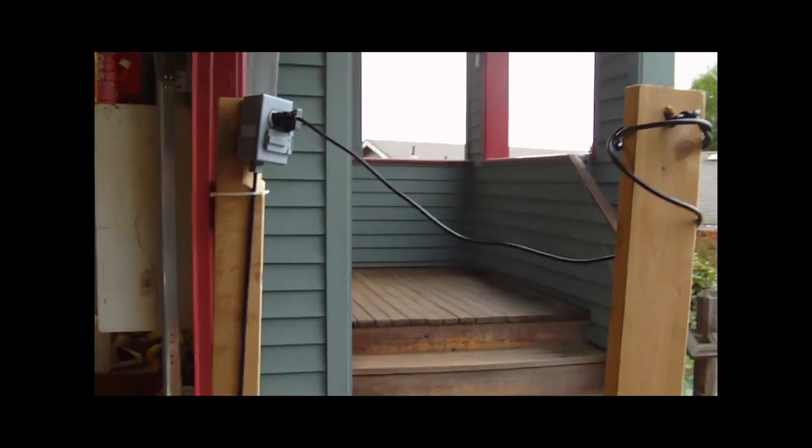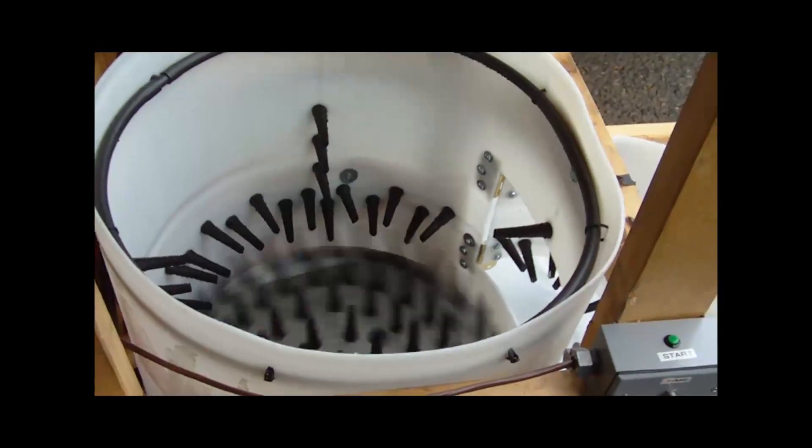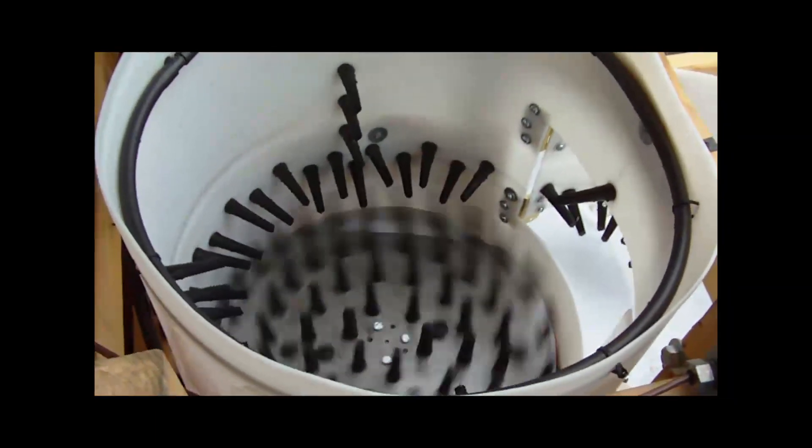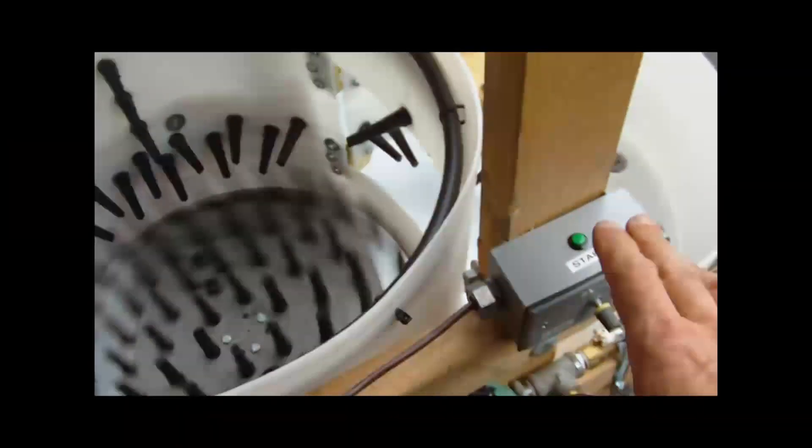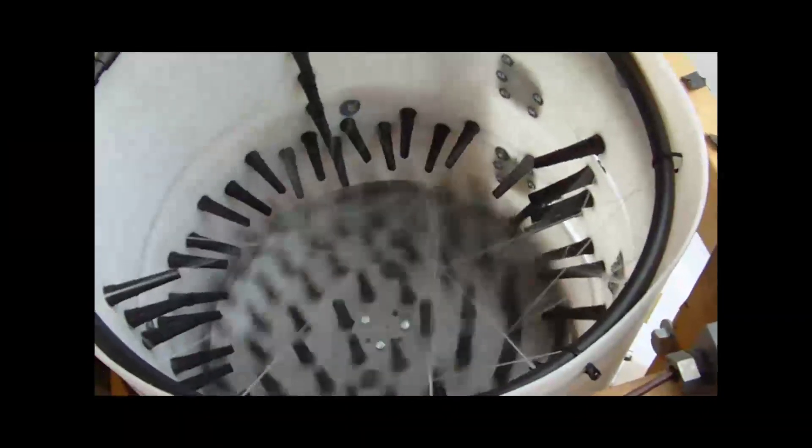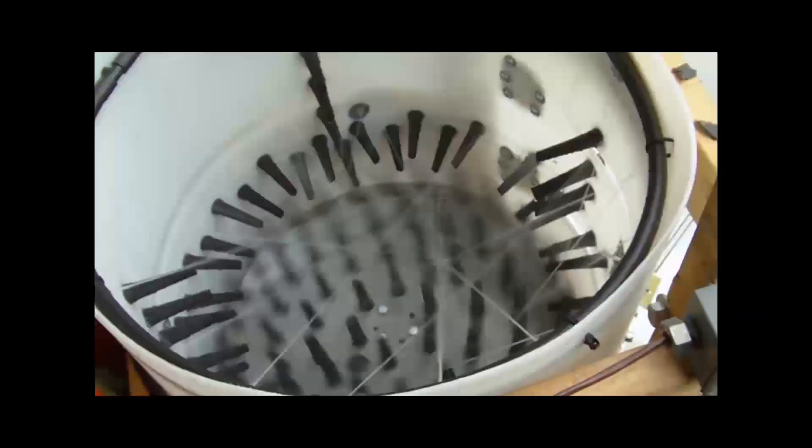So let's see it run. It's a standard chain driven 195 RPM chicken plucker. Now I'm going to hit the start button. See that the water started and the door shut.